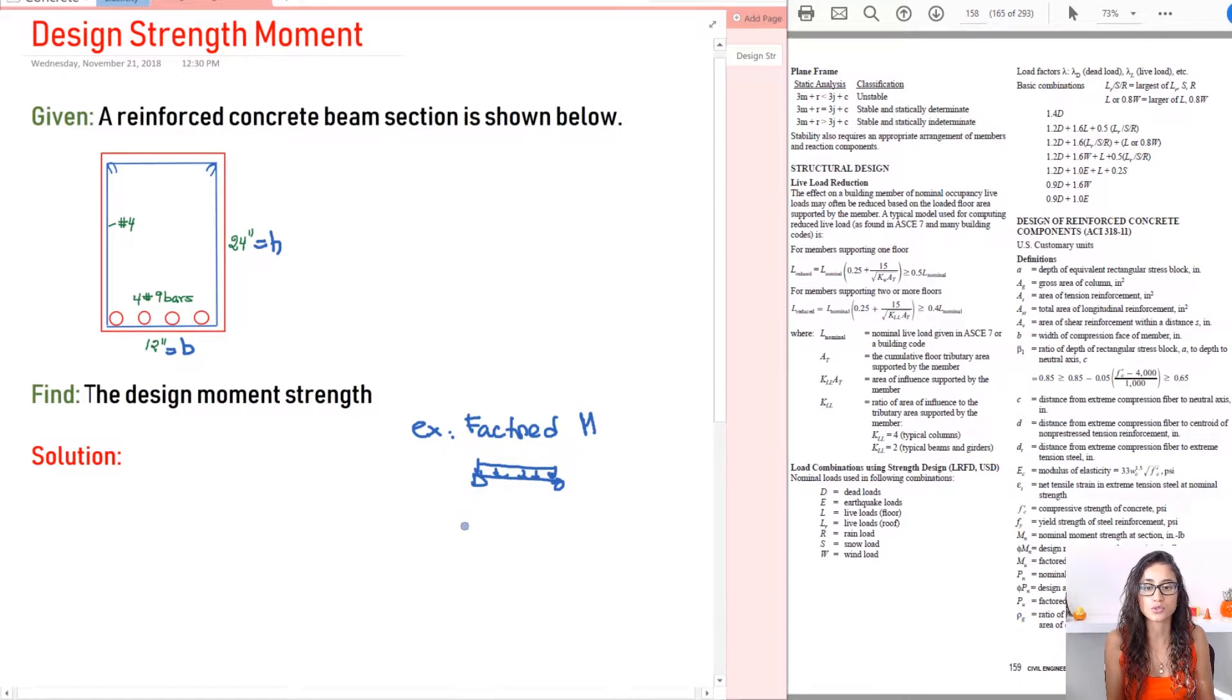So what you do is, so you know that the moment for this is going to be WL squared over 8, right? Because that's the moment for a simply supported beam with the distributed load. The thing that makes it factored is that your W distributed load, it has to be 1.2 dead load plus 1.6 live load. That's the only thing that you really have to be careful when you're calculating the factored load. Everything else is really simple.